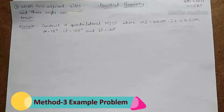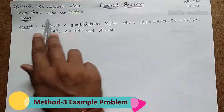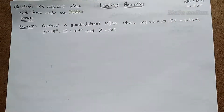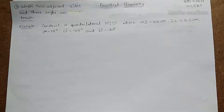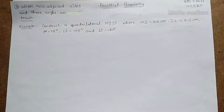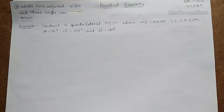Hi, hello! Welcome to Math Medium. Today I came with the topic: when two adjacent sides and three angles are known, from Practical Geometry, a Class NCERT topic. In previous videos we already learned about when three adjacent sides and two diagonals are given, how to reconstruct the quadrilateral. Here is Case 3: if two adjacent sides and three angles are given, then we have to construct a quadrilateral with the given parameters.